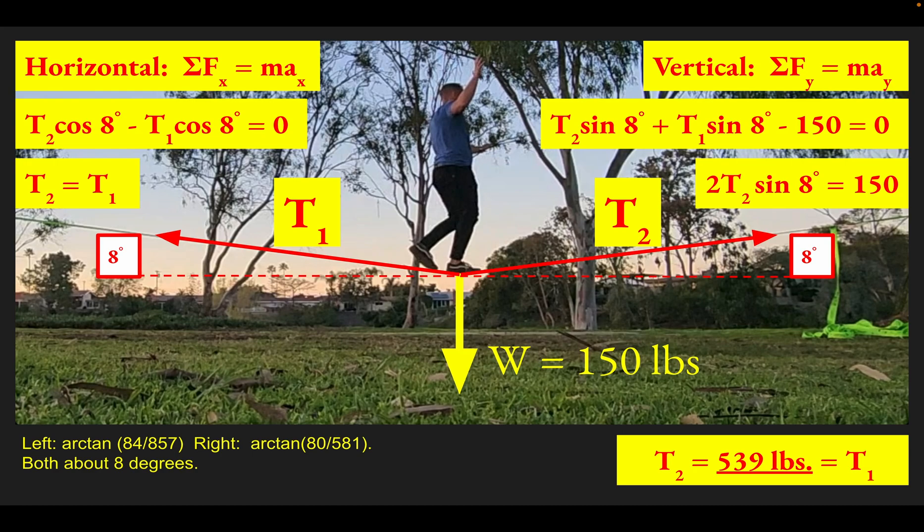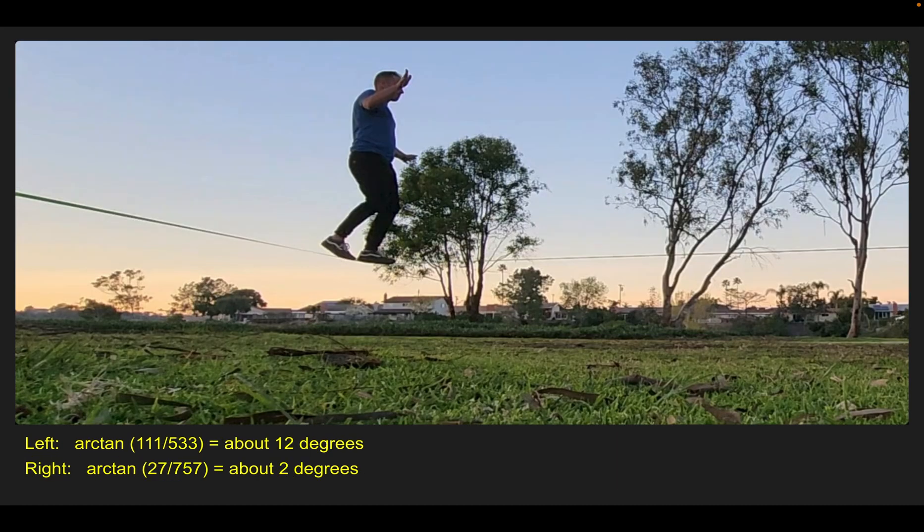Next, we'll look at a situation in which I'm not in the center of the line, where the angles on the two sides are different. This might be something you might want to try with your physics class. Let's find the tension on the two sides of the slack line in this case. I'll help you get started by drawing a free body diagram on the point where my foot is making contact with the line.